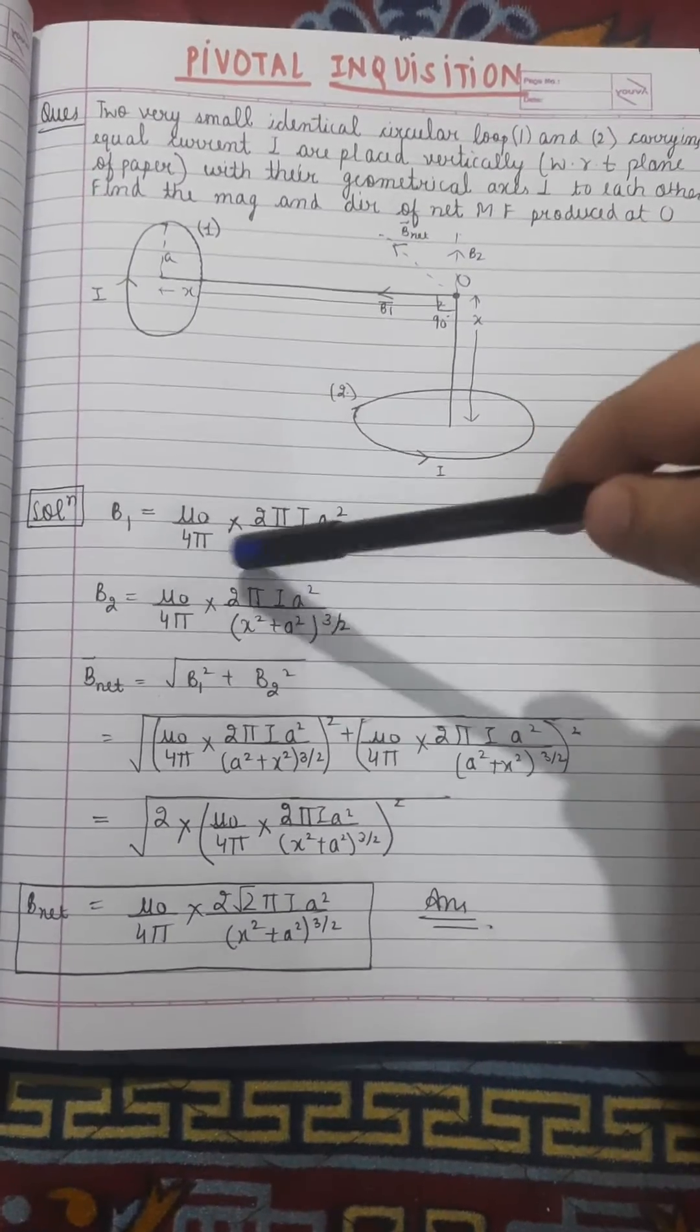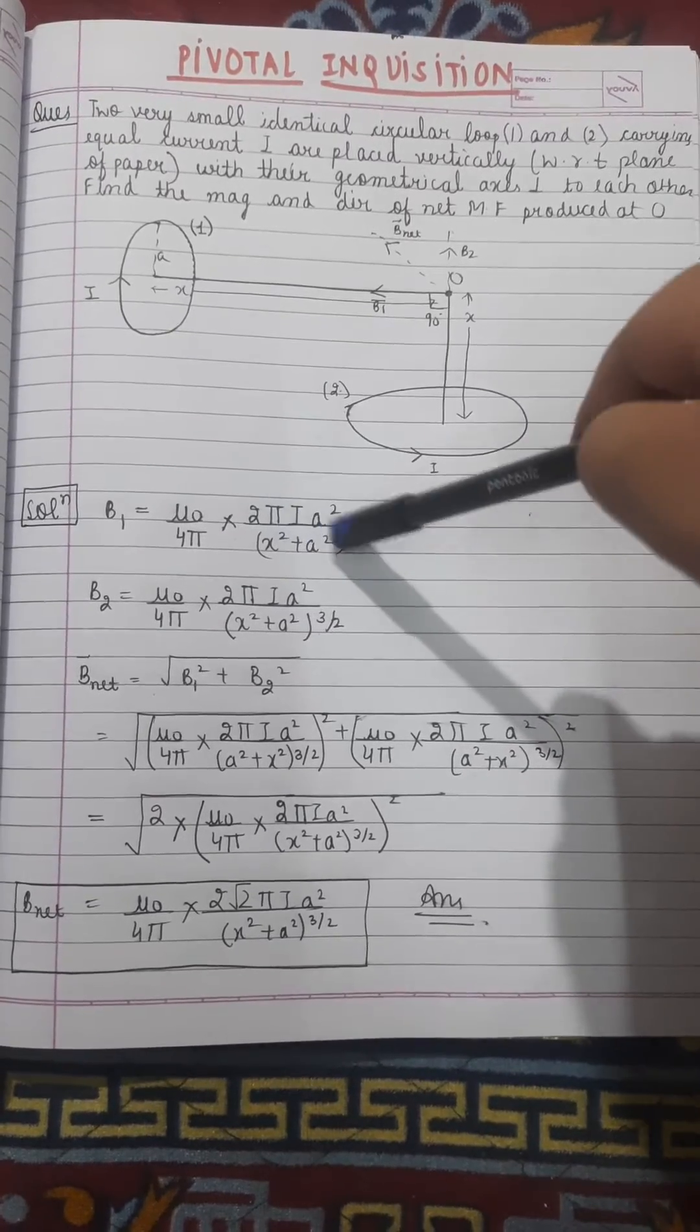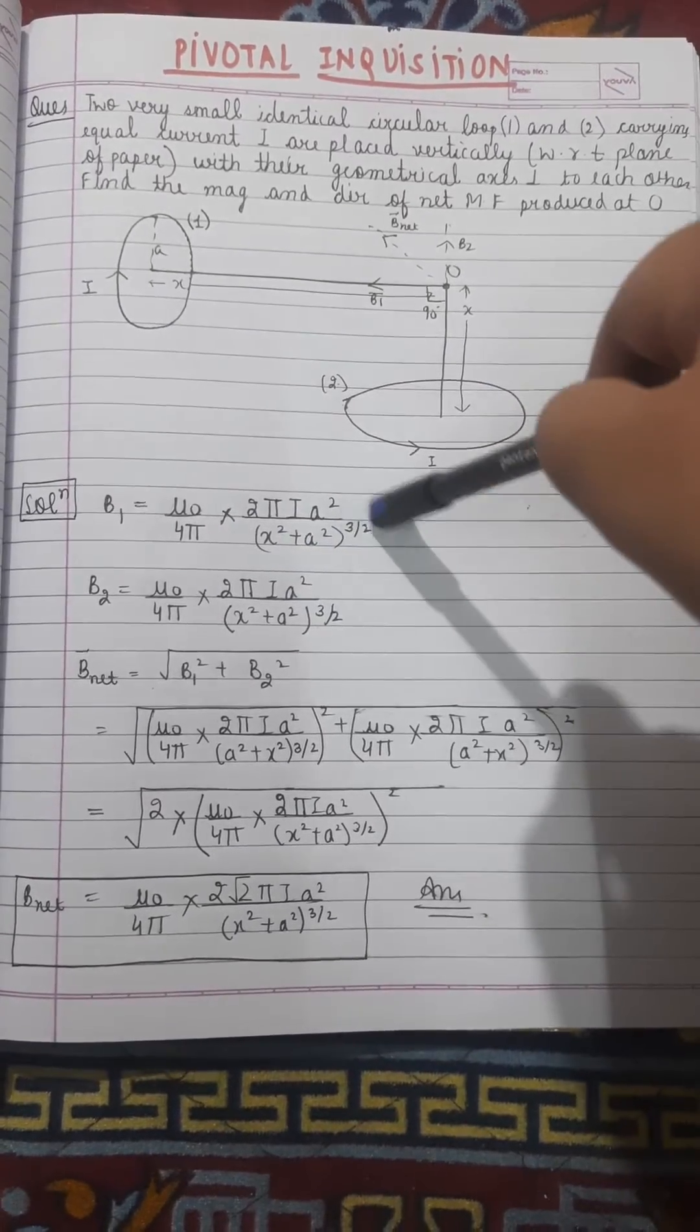μ₀/4π × 2πir²/(x²+r²)^(3/2), where x² + r² to the power 3/2 is what we derived from the derivation.